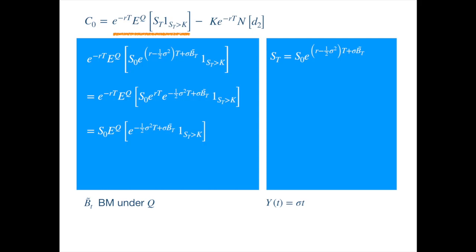...then the shifted process will be a Brownian motion under a measure Q prime, and is identifiable through its density or its derivative with respect to the old measure.